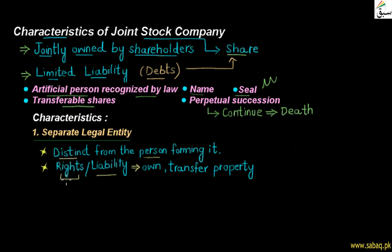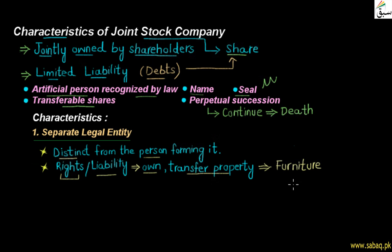Besides, if the company needs to purchase any asset — let's suppose some machinery is required, furniture is required, or any other thing — it will be purchased in the company's name. And if some property is being transferred, let's suppose the company's furniture is being sold, then the shareholders will not sell it in their own name. The furniture will be sold in the company's name, and then the amount will come into the company's accounts. No person, no owner can keep that amount in their personal accounts.